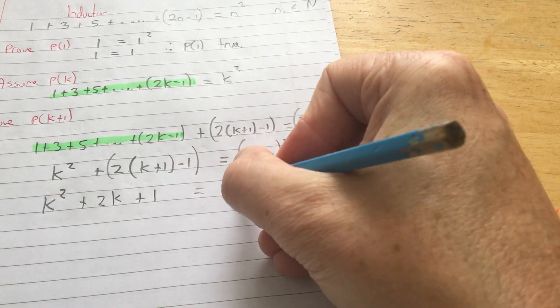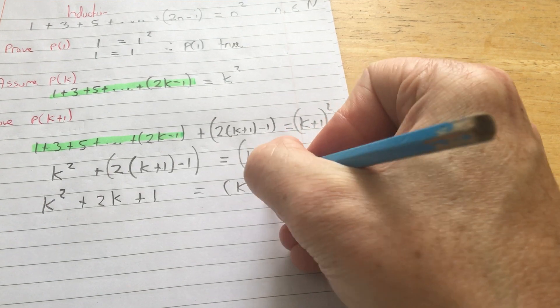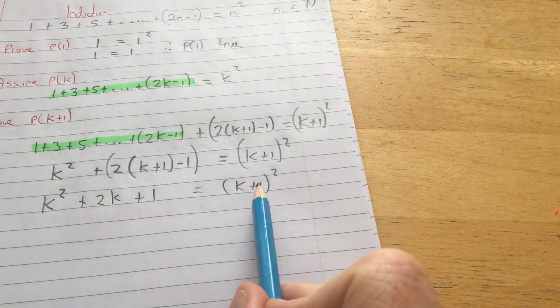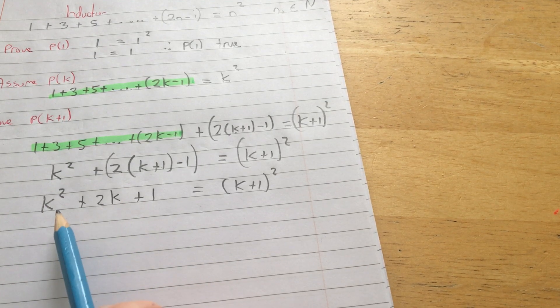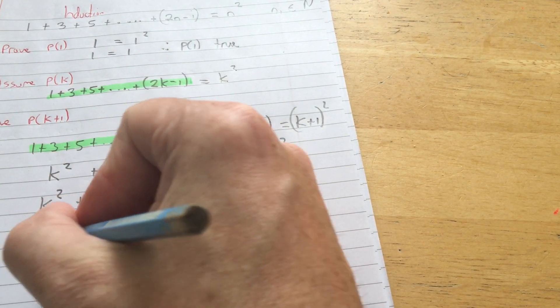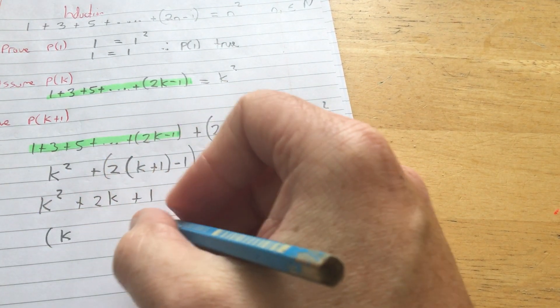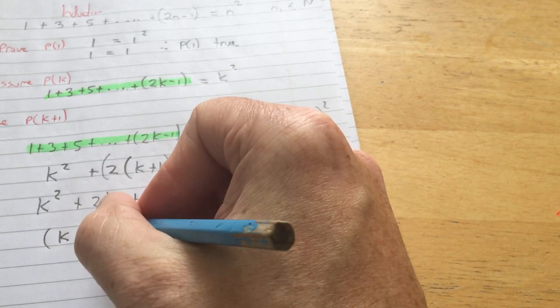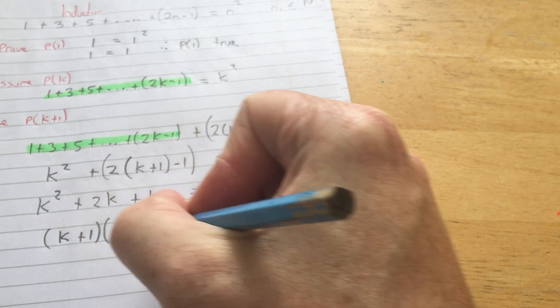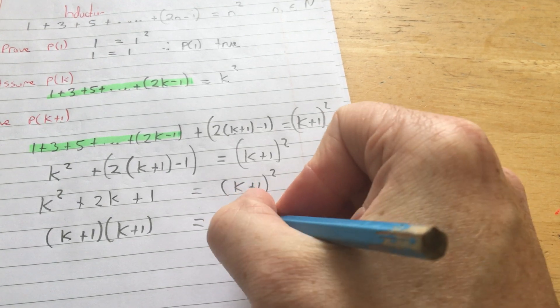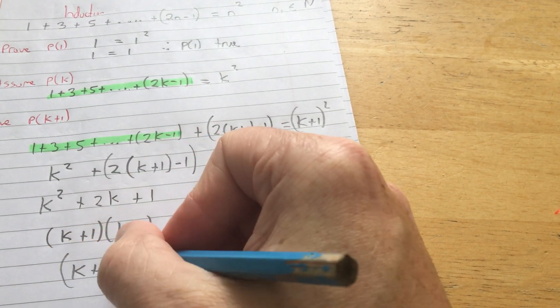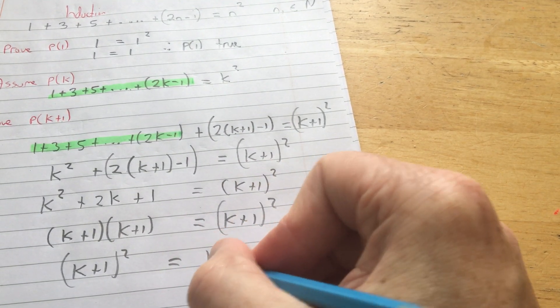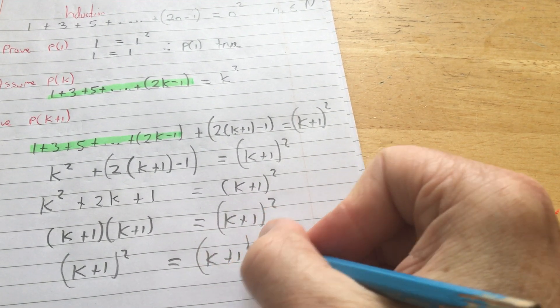Now I have to show that the left-hand side equals the right-hand side. So you have two ways now. You can either square out the bracket and show that the right-hand side is equal to the left-hand side, or you can just factorize this, which is best practice. Just keep trying to turn the left-hand side into the right-hand side. When I factorize this, I get k plus 1 times k plus 1. And k plus 1 times k plus 1 is k plus 1 squared, which is equal to k plus 1 squared.